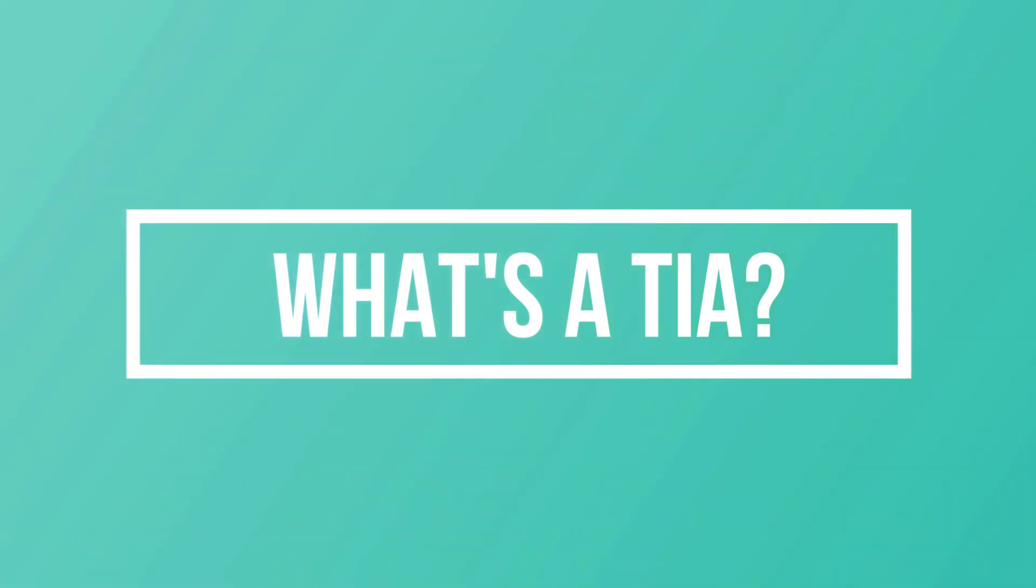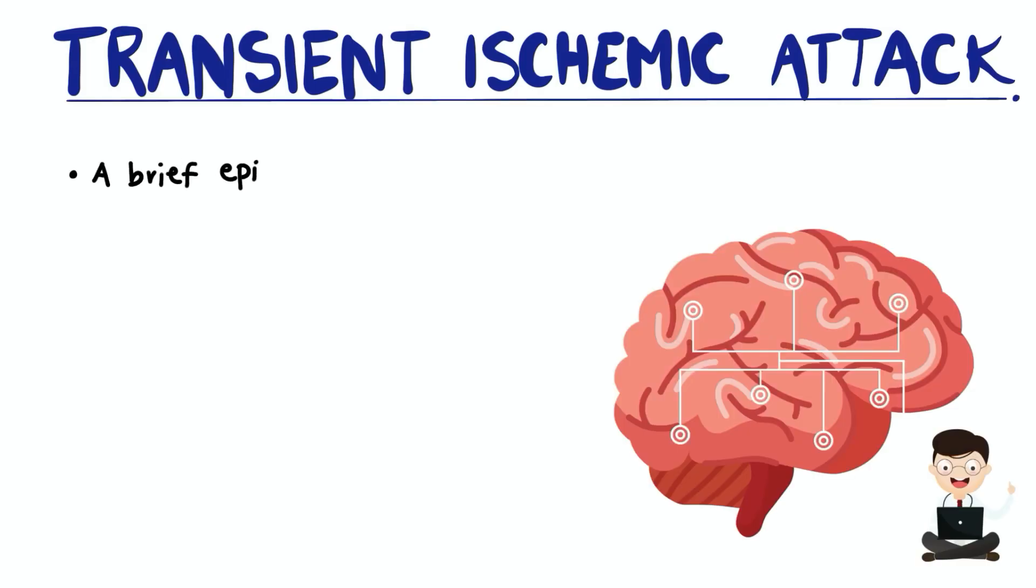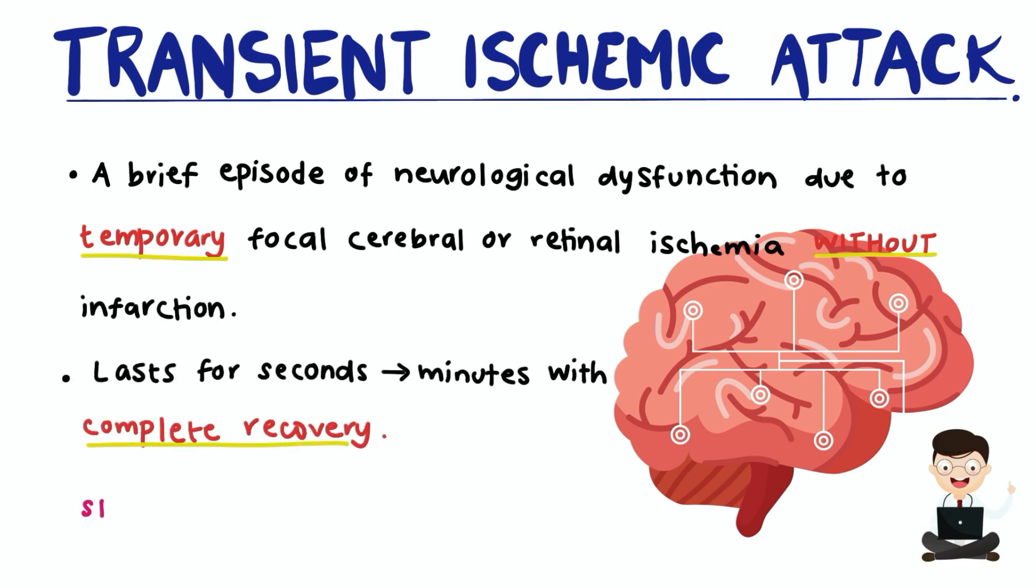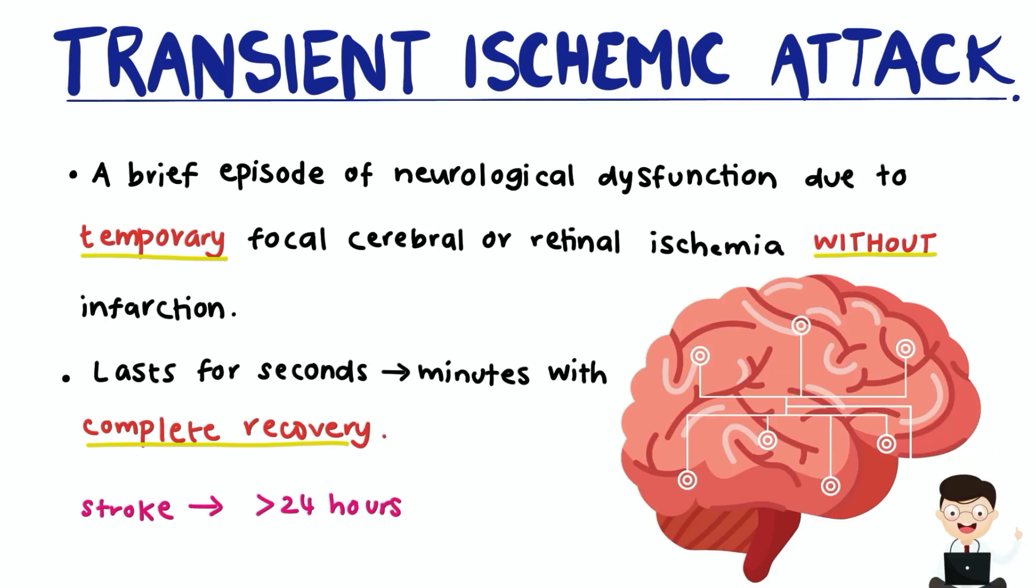So what is a transient ischemic attack? It's a brief episode of neurological dysfunction due to temporary focal cerebral or retinal ischemia without acute infarction. It usually lasts for seconds or minutes with complete recovery and is often called a mini stroke.